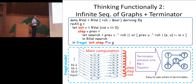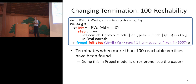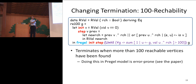Since we are separating the termination from the main computation, you can easily change the termination condition to solve a variant of your problem. For example, if you want to find only the first 100 reachable vertices, you can write this kind of code. This code is basically the same as the previous one except it uses another termination condition: until. If this predicate is satisfied, then the terminator terminates the main computation. Here you can use a comprehension notation over the whole graph to count the number of reachable vertices, and if this count is greater than 100, the computation terminates.